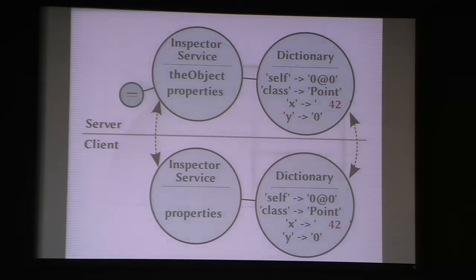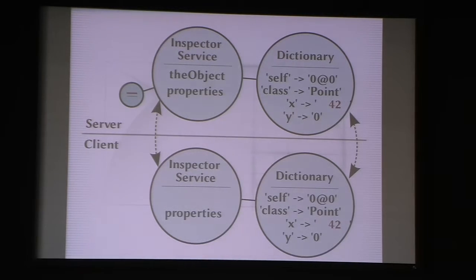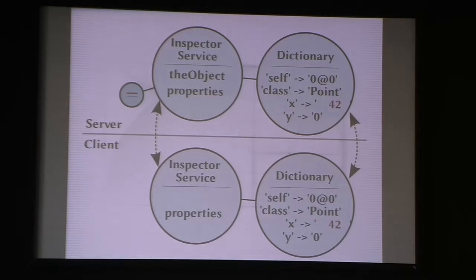We send the message to the inspector service on the server, and the server-side inspector service knows to examine the information in its properties dictionary and update the actual object as needed. So it updates the object and the value 42 is put into our Point. This is not a realistic example — there is no Point class in GemStone unless you add it yourself, because it's headless — but it makes a nice easy example.